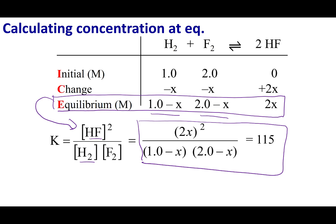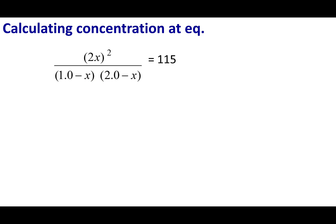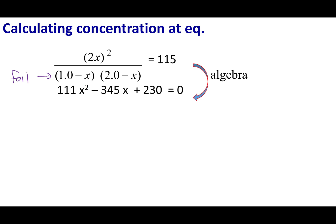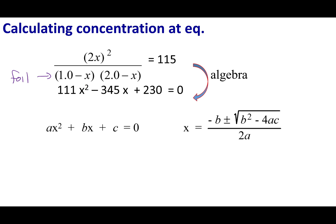That sounds simpler than it is. Combine like variables, foil the denominator, and you get the polynomial: 111x² minus 345x plus 230 equals 0. This is in the form of the quadratic equation. Use the quadratic formula — this is not a math class, so the formula will be provided on your equation sheet.